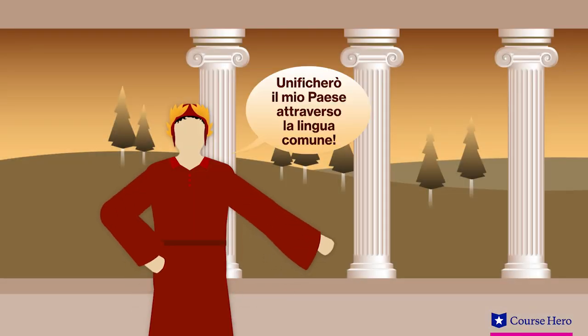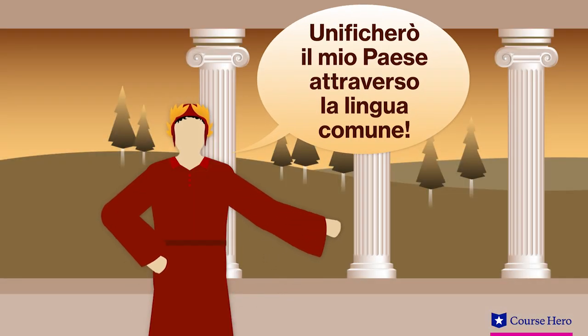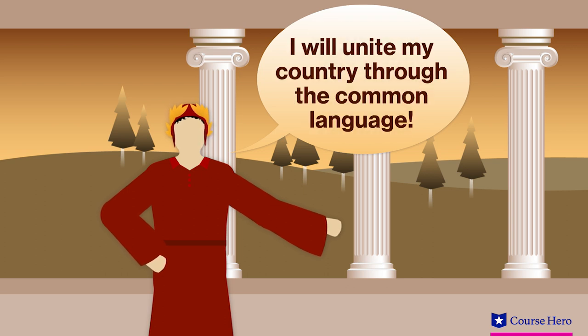Dante chose to write the Divine Comedy in Italian. Most literature at the time was written in Latin, so Dante's choice was unusual. He wanted it to be seen as a literary language, hoping to unite a divided Italy. He didn't succeed, but it established him as the father of modern Italian.